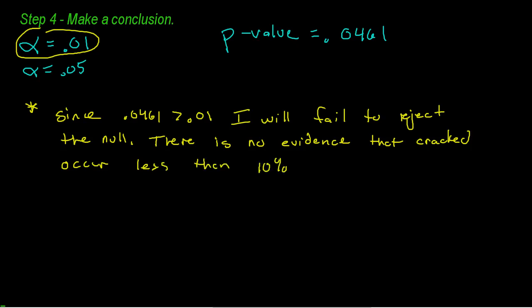What does that mean, I will fail to reject the null? This means there is no evidence that cracked ingots occur less than 10%. I'm not saying the null is true. I'm saying there's no evidence that it's less than 10%. There is no statistical significant hard evidence that says this new molding process has definitely reduced the proportion of cracked ingots.